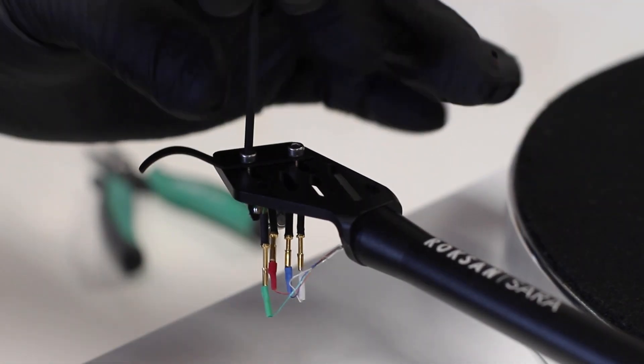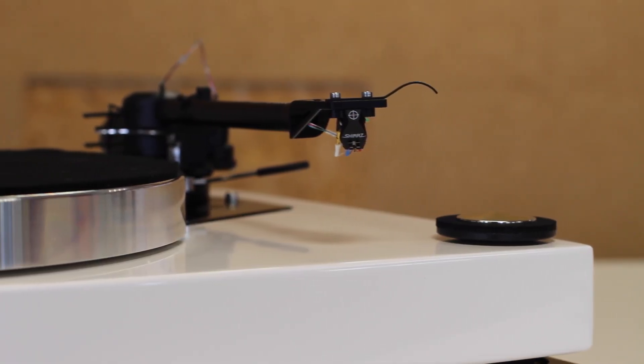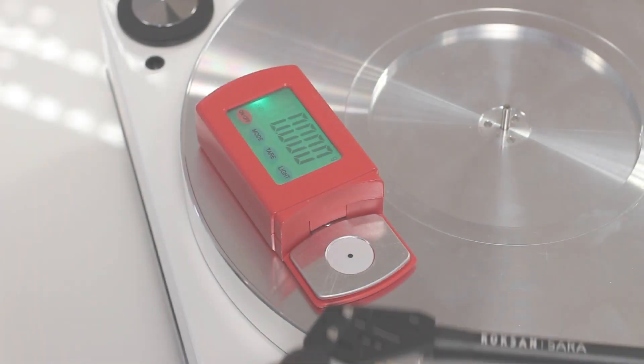Fix the cartridge to the head shell with the supplied bolts. Make sure the front of the cartridge is parallel with the front edge of the head shell.